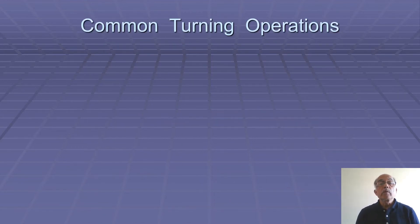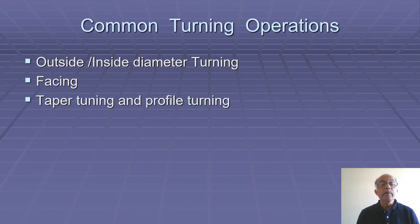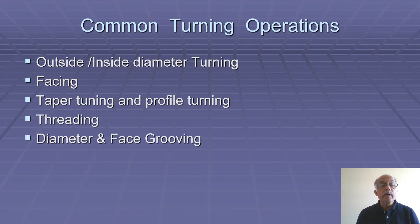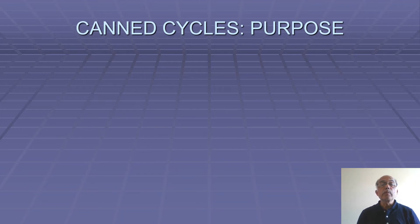Common turning operations include outside or inside diameter turning, then facing, then taper turning and profile turning, threading, and grooving. For all these operations, different canned cycles are used. Now we'll discuss the purpose of different canned cycles.